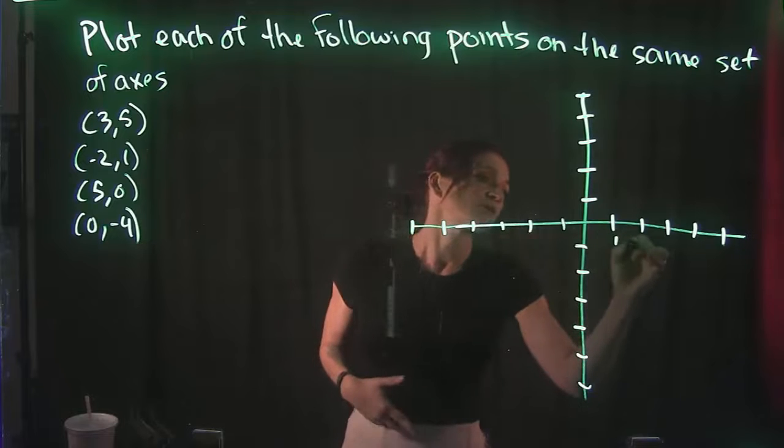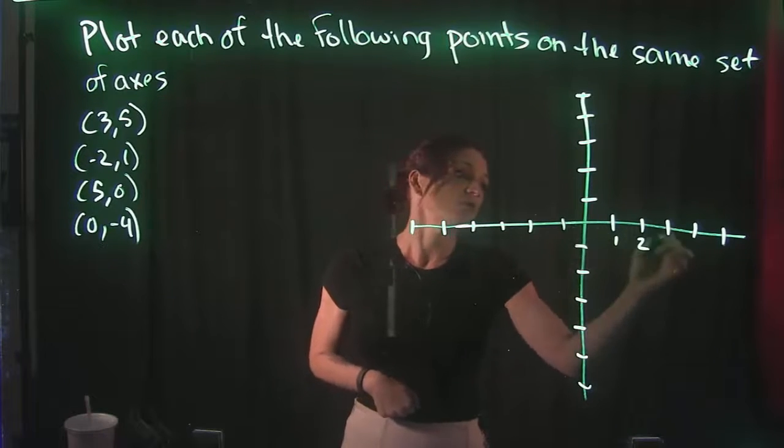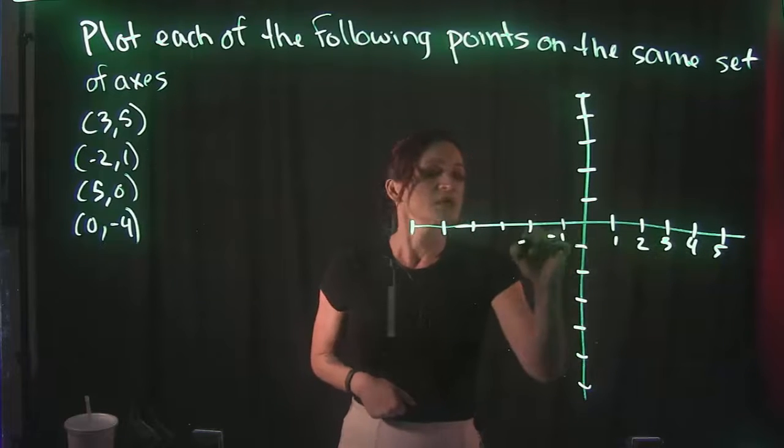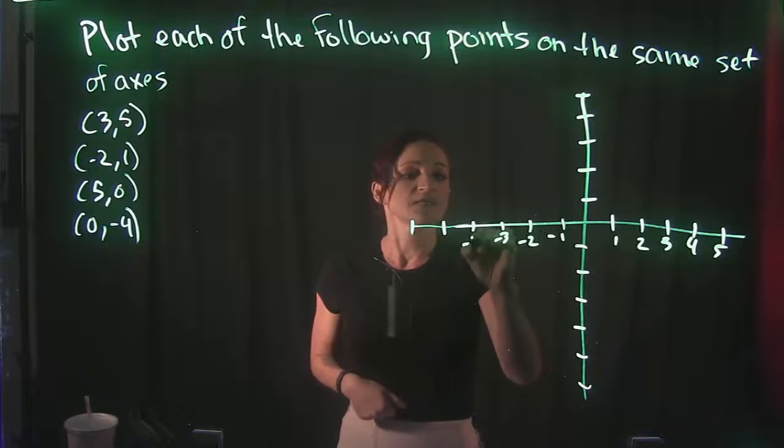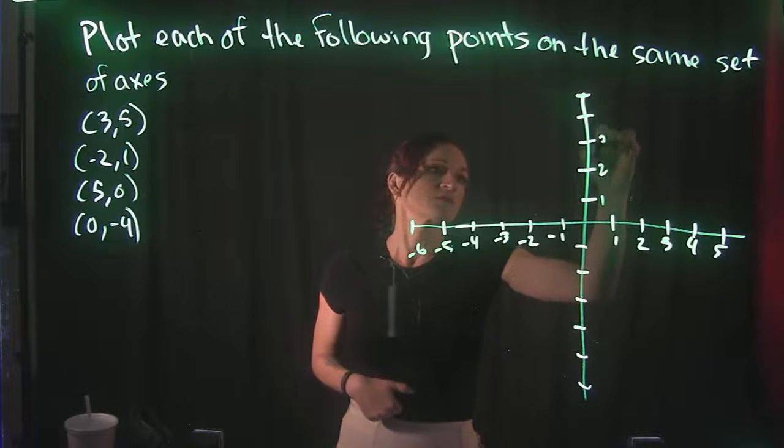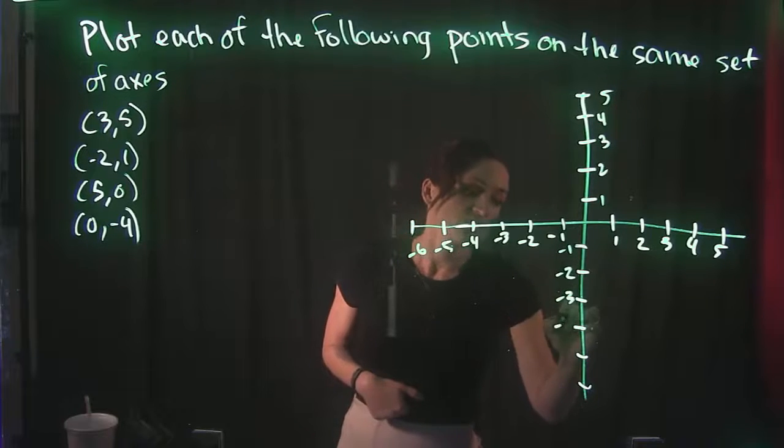So when it comes to our coordinate system, we always start at the origin, which is right here smack in the middle. To the right is our positive numbers and to the left is our negative numbers. Just like if we go up, that's going to be positive, and if we go down, that's going to be negative.